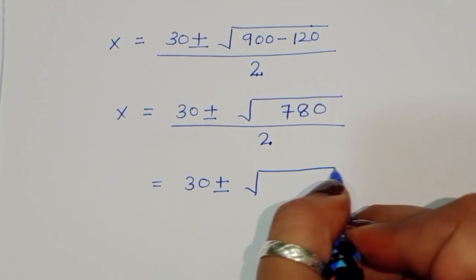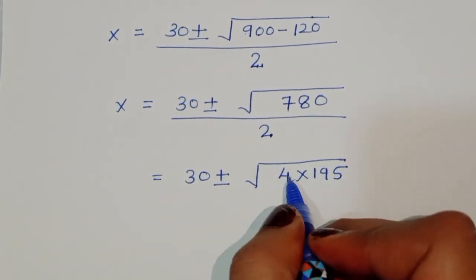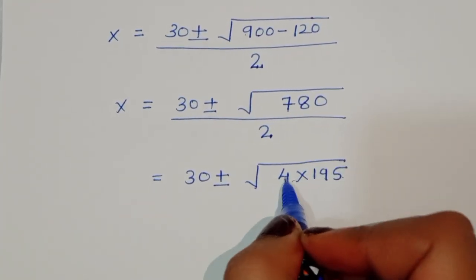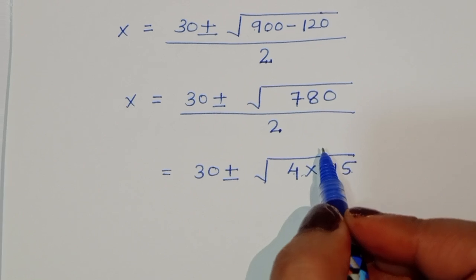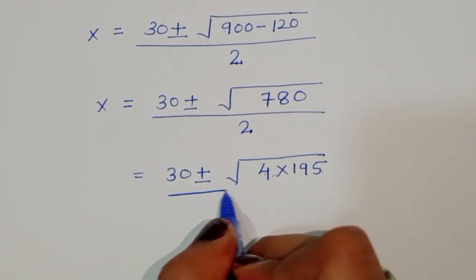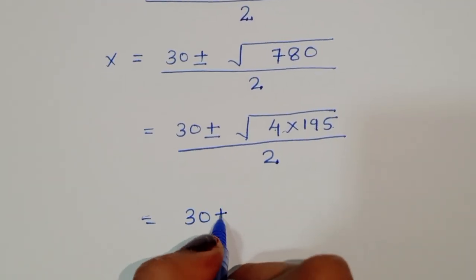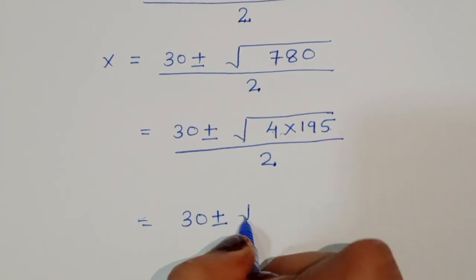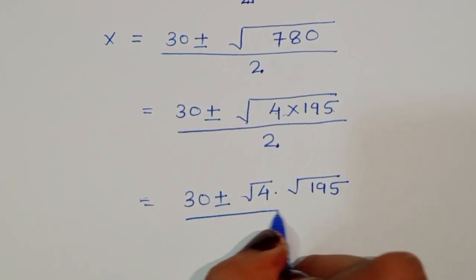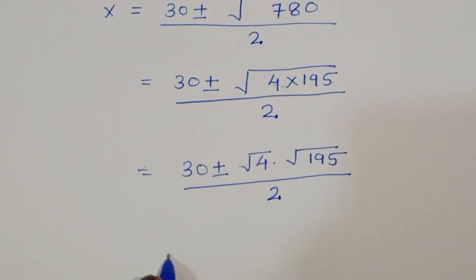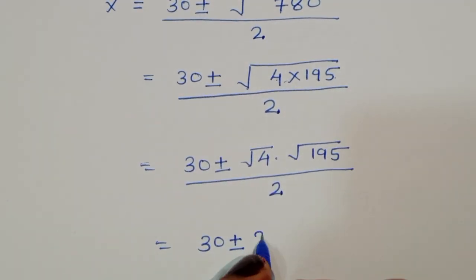We can write 780 as 4 times 195. So the expression becomes 30 plus or minus the square root of 4 times 195, divided by 2. We separate this as square root of 4 times square root of 195, divided by 2. The square root of 4 is 2, giving 2 times square root of 195.